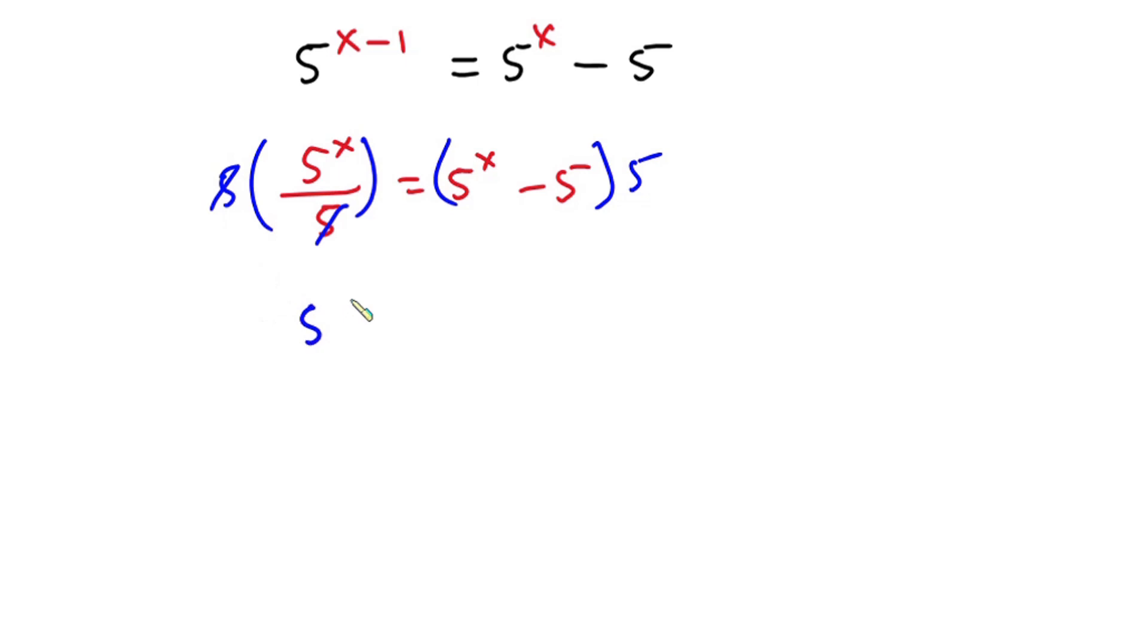Now we have 5 to the power x equals, let's distribute this 5, so we have 5 times 5 to the power x minus 5 times 5 is 25. Great.